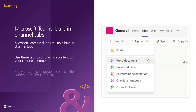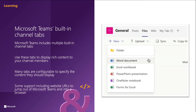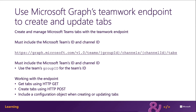You can do that using the Microsoft Graph Teamwork endpoint. Many of the different tabs are configurable to specify the content that they should display, and some of them support including website URLs so that you can jump out of Microsoft Teams and into a browser if you need more real estate. To create or configure Microsoft Teams tabs using the Microsoft Graph API, you need to know the team's app ID of the app and the entity ID, the content URL, the remove URL, and website URL to provide for that kind of app. Some of these properties are required while others aren't, depending on the tab that you're creating.